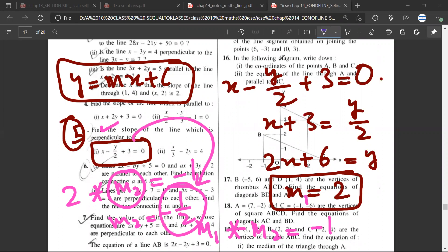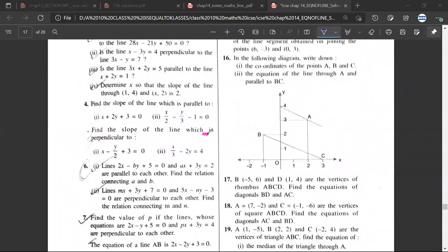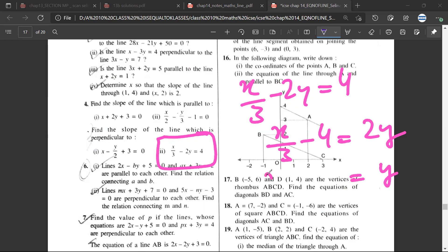So M1 into M2 equals minus 1. M1 value is 2, M2 value is unknown which you have to find. So M2 value is minus half.